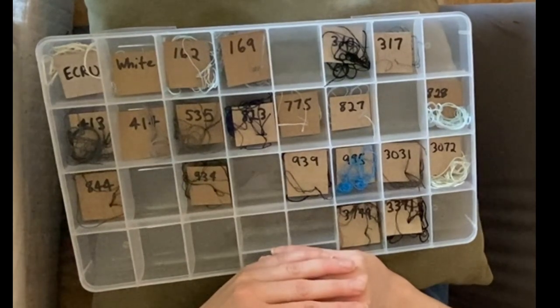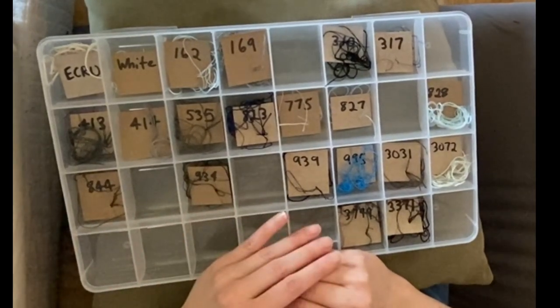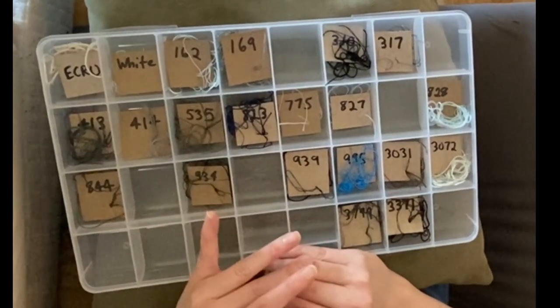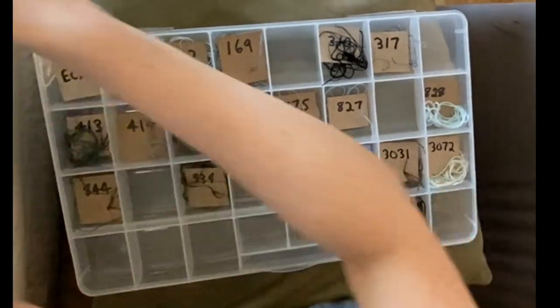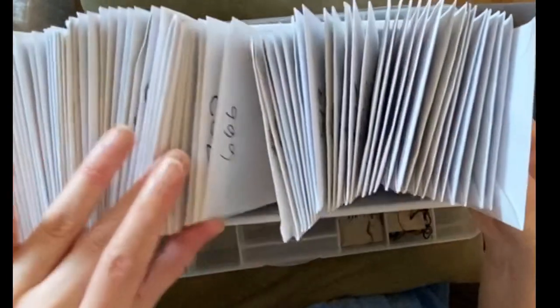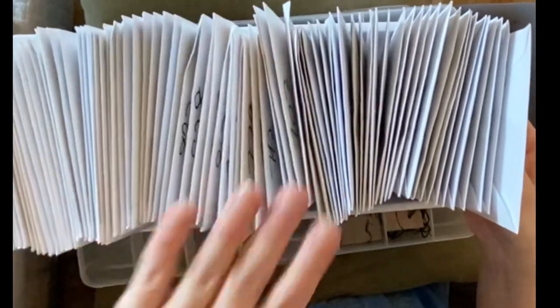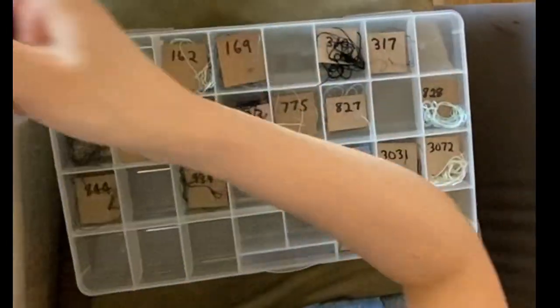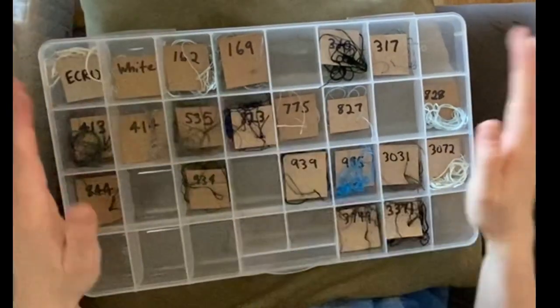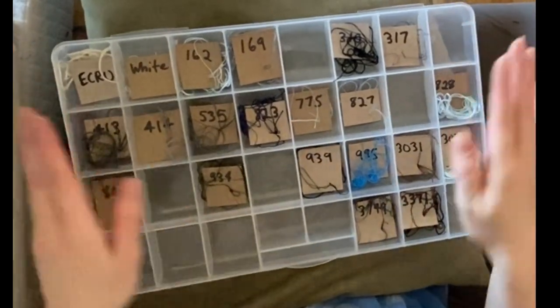So I have another video I did about my floss organization system and I will put a link to that, but basically I keep my stuff in envelopes, all the colors pulled in a tub out of my master set in number order, and then when I get to a color that I'm going to be using a lot in the section that I'm working in, it goes in the working tray.